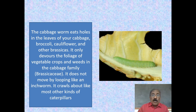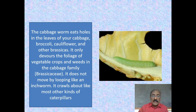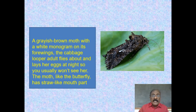The cabbage worm eats holes in the leaves of cabbage, broccoli, cauliflower, and other brassicas. It only devours the foliage of vegetable crops and weeds in the cabbage family. It crawls about like most other caterpillars — it does not move by looping like an inchworm. The grayish-brown moth with a white monogram on its four wings, the cabbage looper adult, flies about and lays her eggs at night.